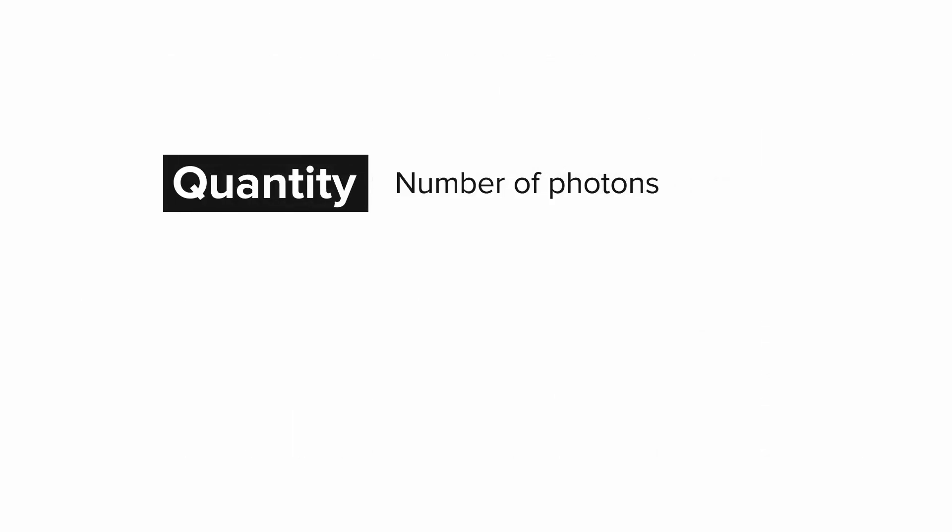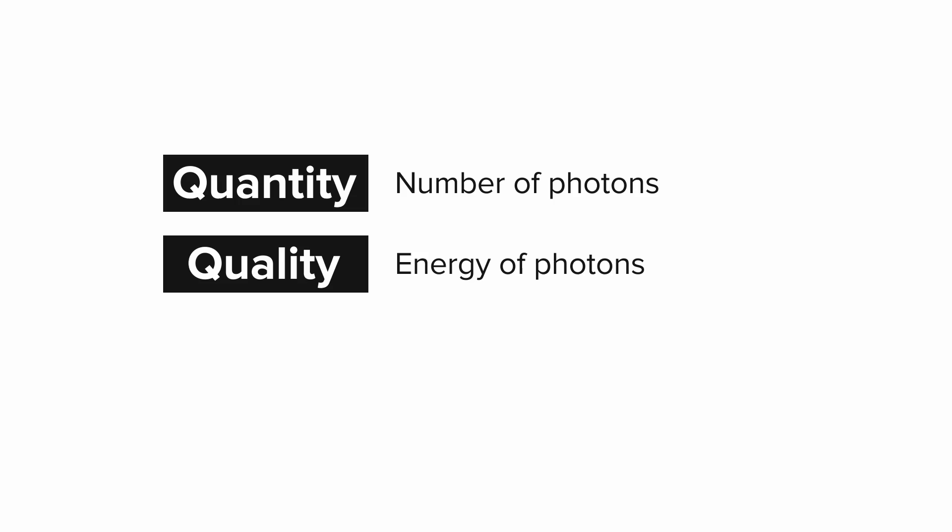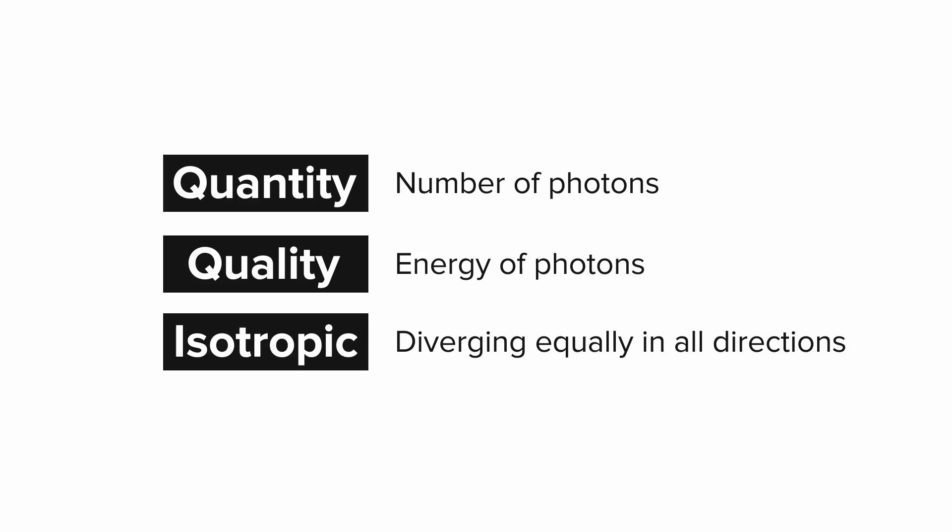Another term is quantity. Remember that quantity refers to the number of X-ray photons, and a similar term is quality, except this term refers to the energy of photons. Finally, we talked about the term isotropic. Isotropic refers to a condition of diverging equally in all directions.